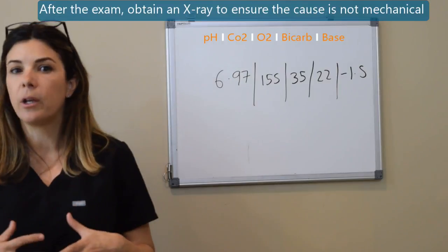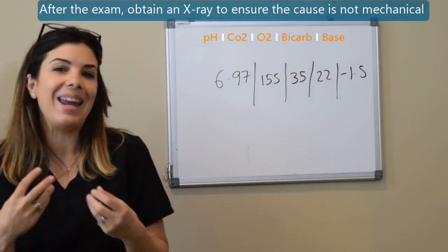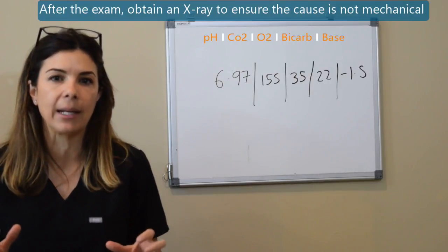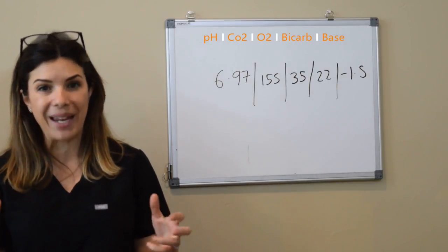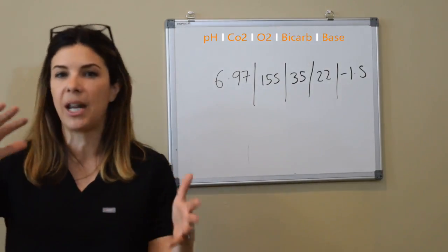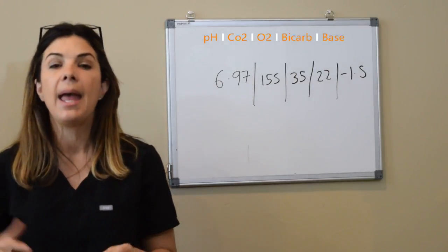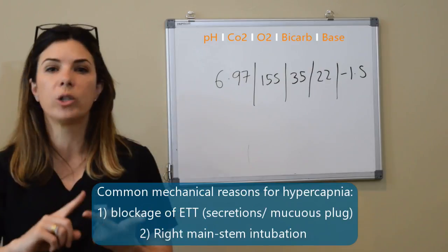So what we would probably do in this situation is get an x-ray of the baby. Because very often, when a carbon dioxide is suddenly so high, it can indicate that this could be something mechanical going on. One of the most common things that we see mechanically happening with an elevated CO2 with a baby otherwise appearing well, the oxygenation is kind of trucking along the same, is that the ET tube is either blocked or too deep.